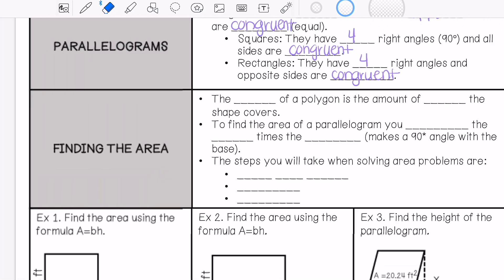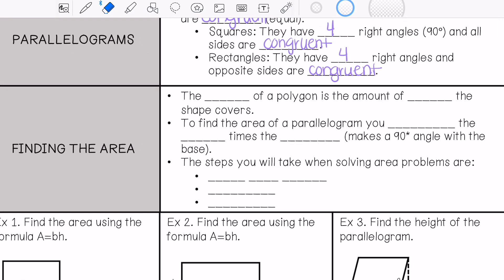Alright, when you find the area of a parallelogram, the area represents the amount of space the shape covers. To find the area of a parallelogram, you would multiply the base times the height. And the height needs to make a 90 degree angle with the base.